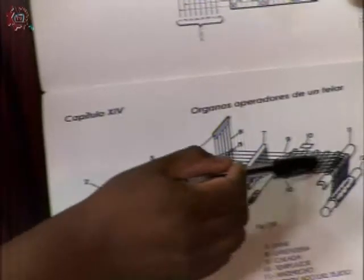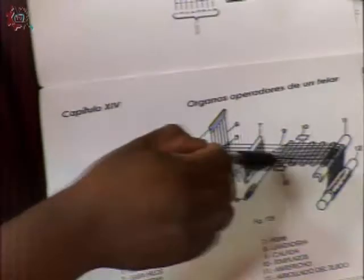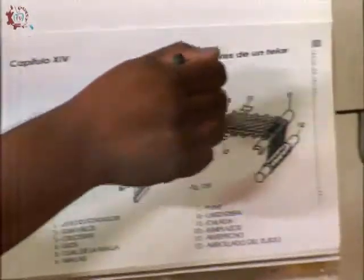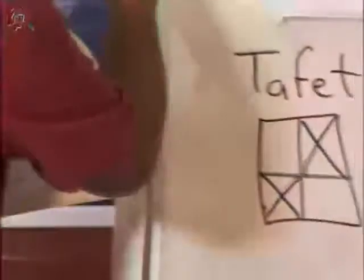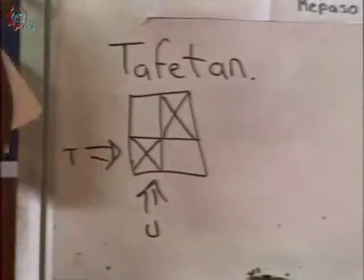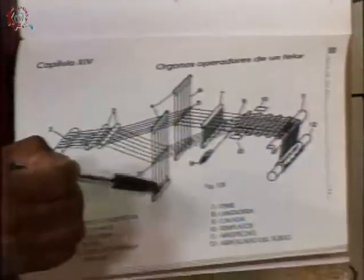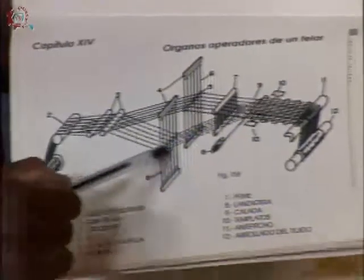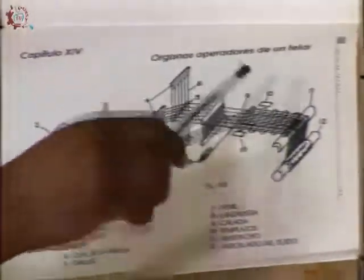Los hilos que se ven aquí — hay un carrete de hilo — se llaman hilos de urdimbre. Son los hilos que están en sentido vertical. Y los hilos que se ven en sentido horizontal se llaman hilos de trama. El picado es la forma en que van a evolucionar estos hilos. Lo que hace evolucionar los hilos son los lisos. El repaso es la forma en que van a pasar estos hilos por los ojales de las mallas que tiene cada liso. Por un peine los va a plegar para formar el tejido.